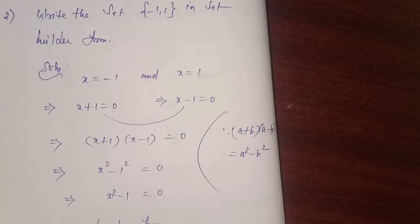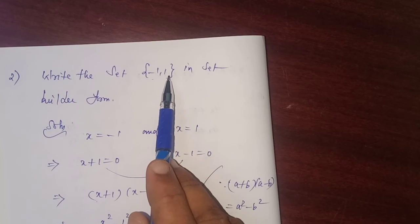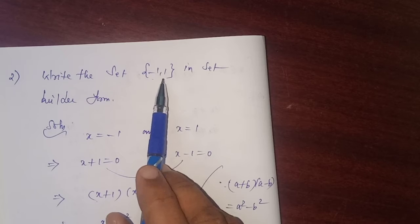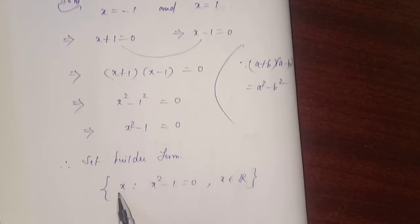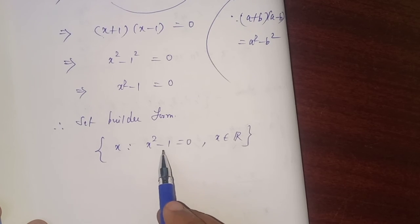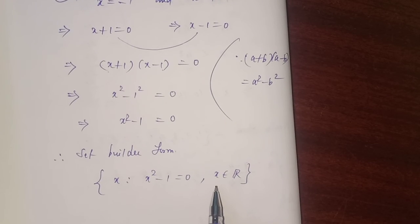You are given the set in roaster form. You are asked to write the set in set builder form. Again I tell you: set of all x such that x² - 1 = 0. If you solve this equation, you will get two values for x: -1 and +1. Particularly, I have to mention that x belongs to the set of all real numbers.